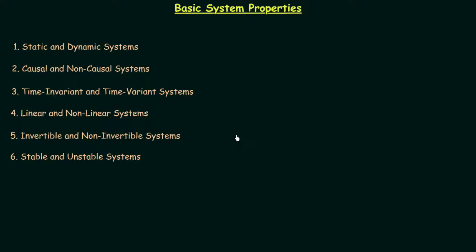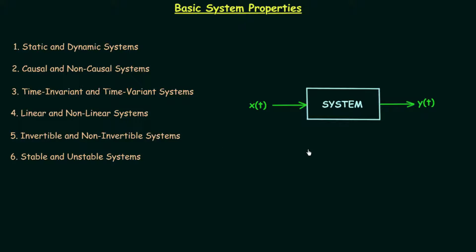Now I will explain a few basic concepts important for understanding the different types of systems. We will first understand some basic notations and how the system actually works. Here we have a system represented by a block. The input to the system is x(t) — this is the standard notation we will use throughout this chapter. Then we have y(t) coming out of the system as the output. So x(t) is input and y(t) is output.